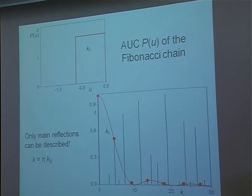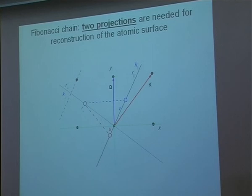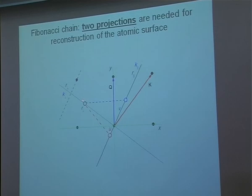But you can see that it is not enough. For one k0 you have only a few peaks which can be described — you need another k vector. So a single distribution is insufficient for the reconstruction of the whole diffraction pattern. In the high-dimensional representation, we have the atomic surface and we project perpendicular to a k vector onto real space to get a position u. Now we have to find another vector q and do the same — project perpendicular to the q vector onto physical space to get another distance u.